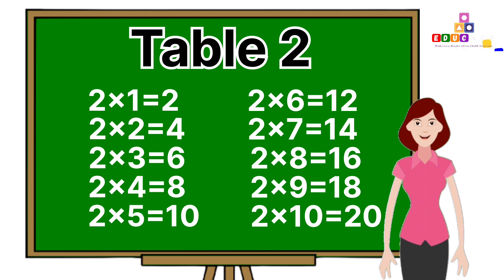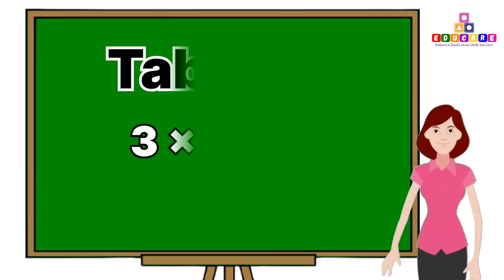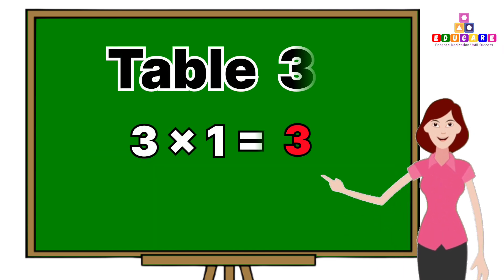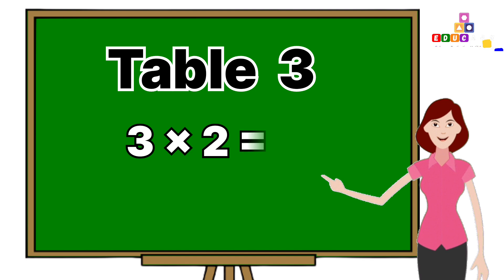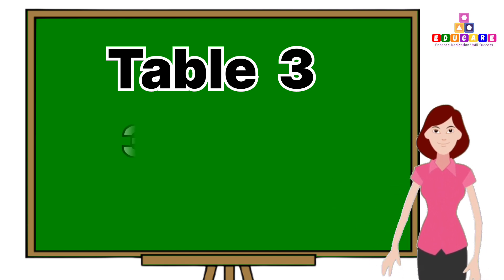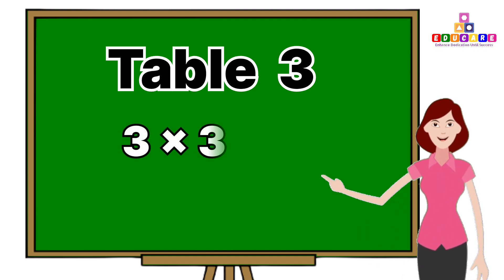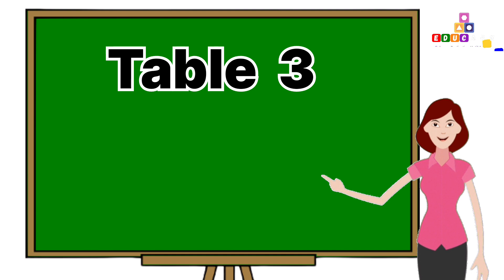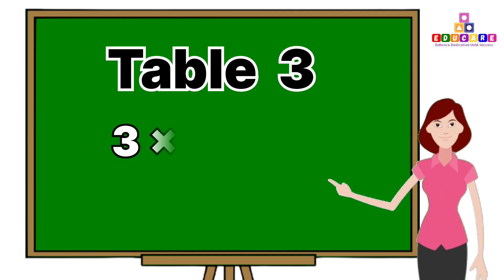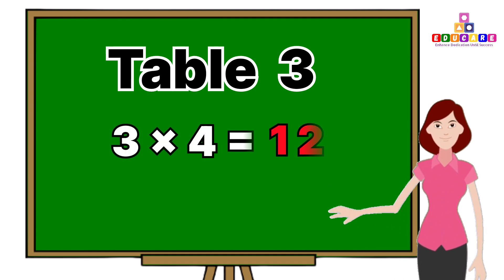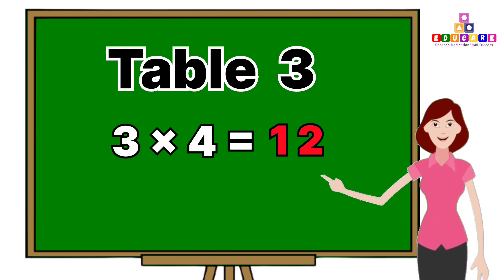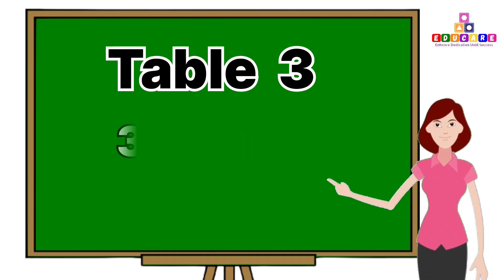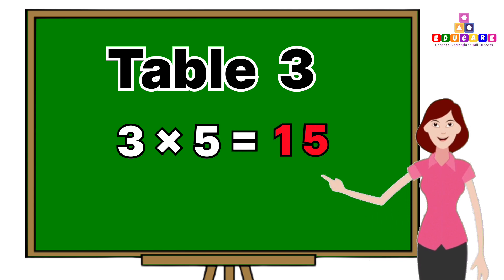Table 3. 3 ones are 3, 3 twos are 6, 3 threes are 9, 3 fours are 12, 3 fives are 15.